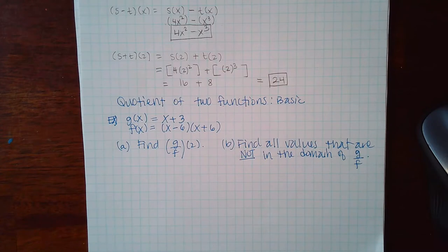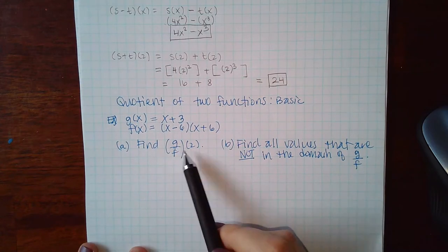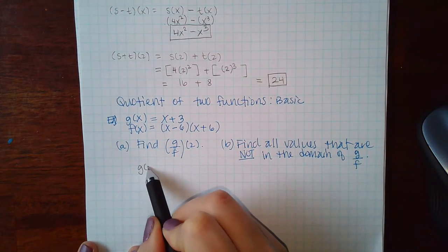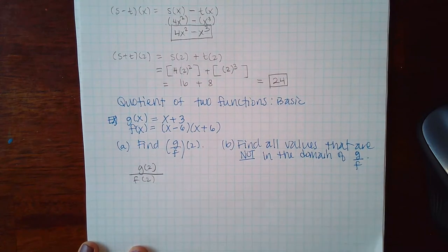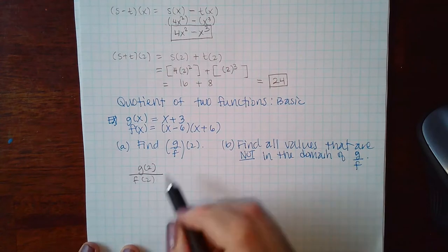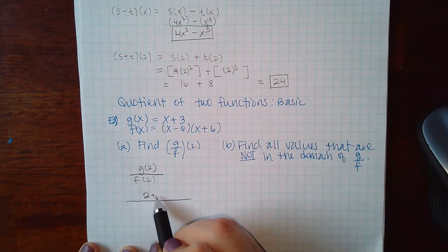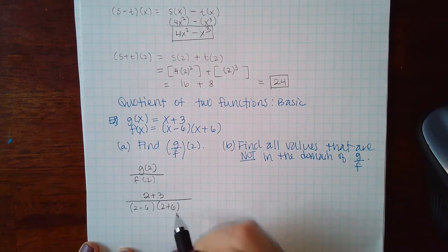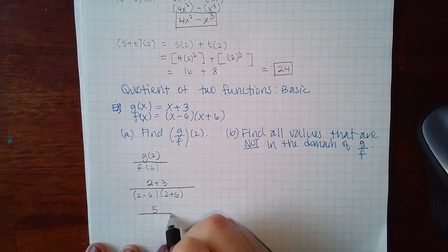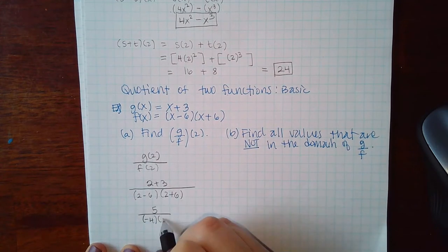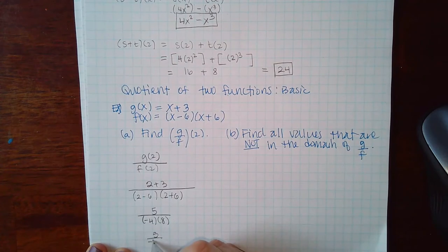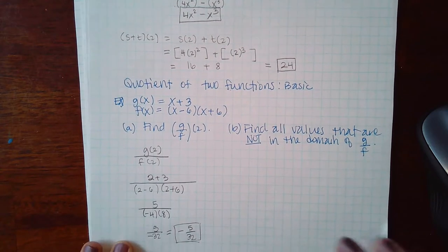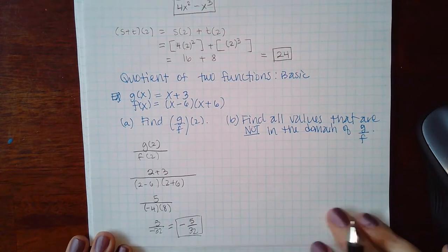For the quotient: g(x) = x+3, f(x) = (x−6)(x+6). They want us to find g over f evaluated at 2, which we rewrite as g(2) over f(2). Plugging in: numerator is 2+3, denominator is (2−6)(2+6). That gives 5 over (−4)(8), which is 5 over −32, or −5/32.